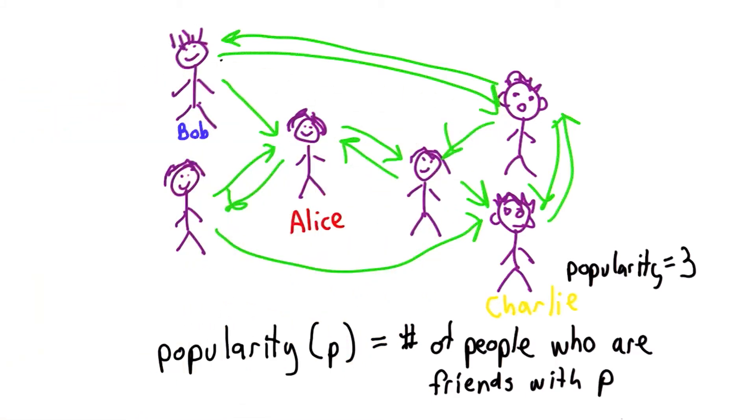Bob only has one arrow going to Bob, so his popularity score would be one. So this isn't a bad way to define popularity, but it's not quite right. So the definition of popularity doesn't just depend on the number of friends you have. It depends on both the number and the popularity of your friends.